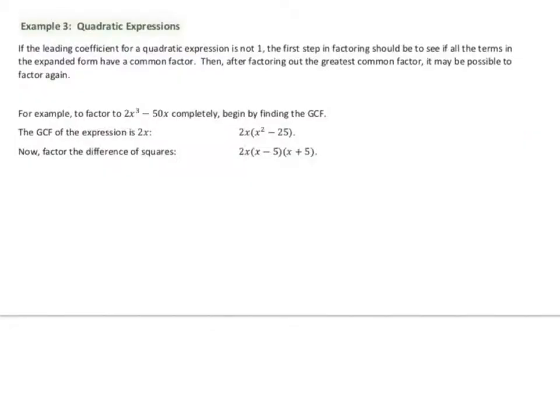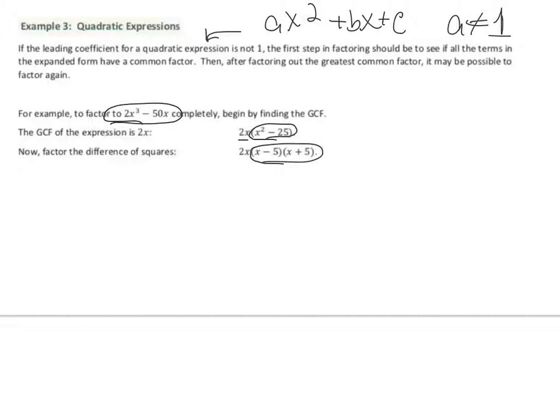Quadratic expressions. If the leading coefficient for a quadratic expression is not 1, the first step in factoring should be to see if all the terms in the expanded form have a common factor. What this says is ax squared plus bx plus c, where a is not equal to 1. So then after factoring out the GCF, it may be possible to factor again. If you look at this one, first we're going to factor out the GCF, which in this case is 2x. And then we're going to look at what's left over and try to factor it again.